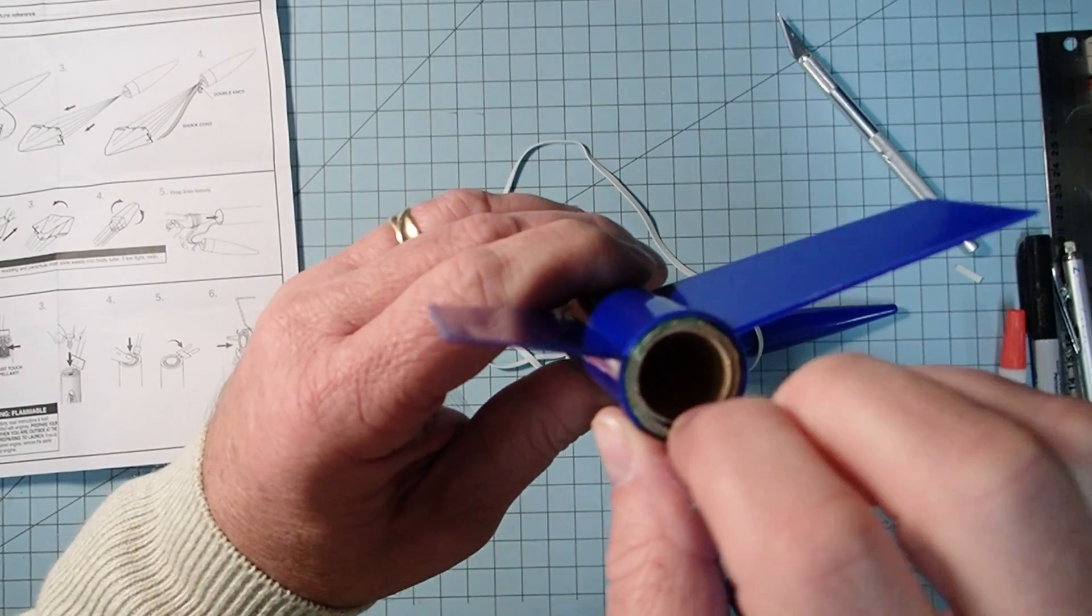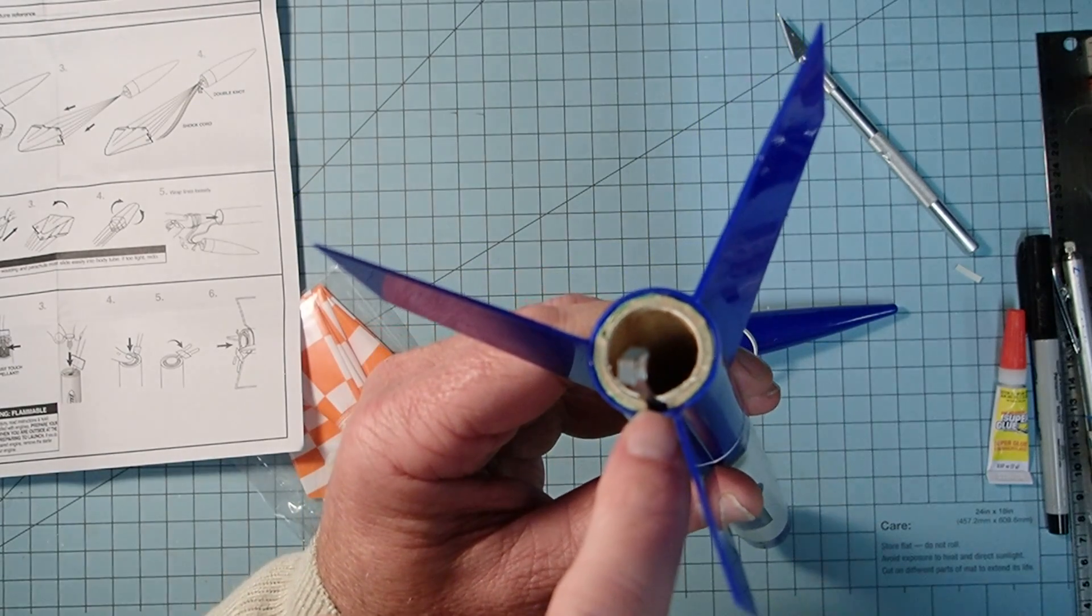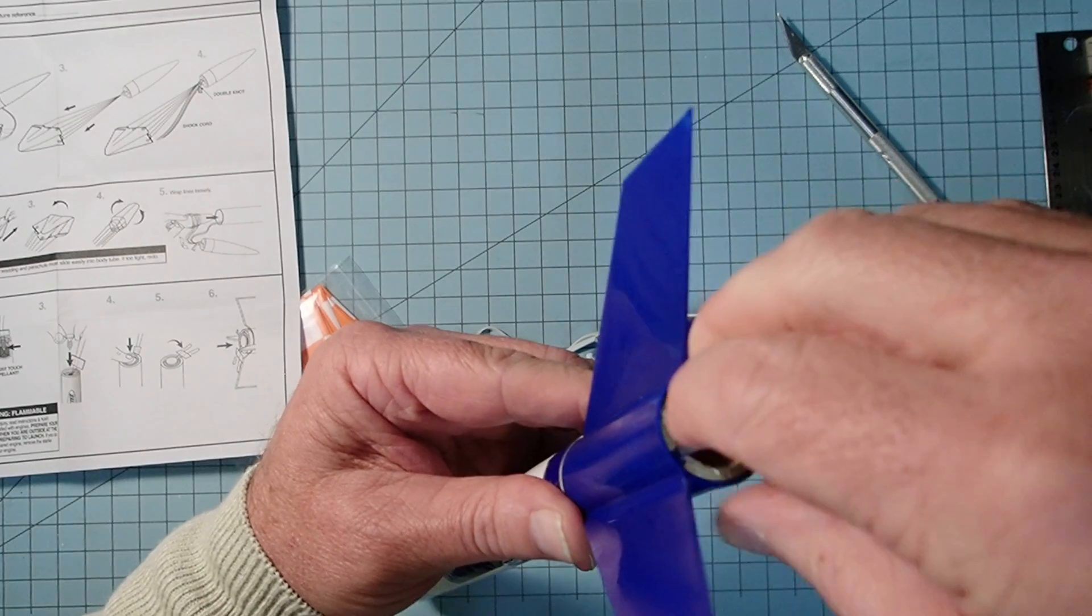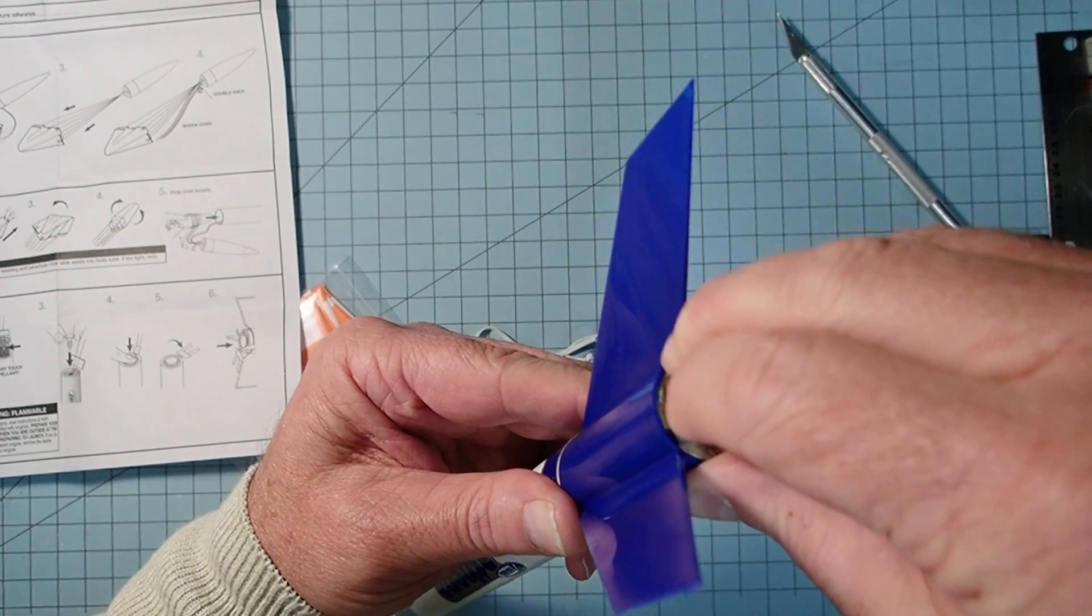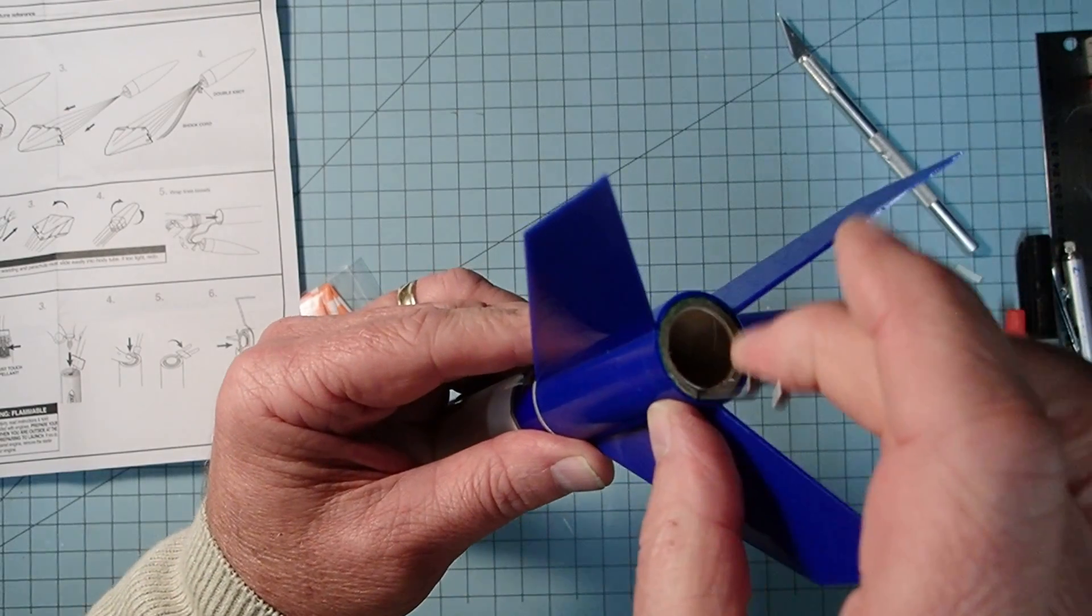All right, also check your engine clip. All right, now this engine clip is supposed to be in that little gap there. Mine is actually over a little bit. And so sometimes you can just bend that over like that. So now it moves freely in there and that's what we want.